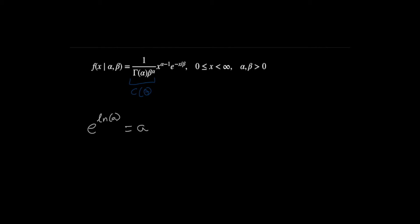If you take e to the log of A, that's just the same thing as A. What this means is that we're able to take the exponential of the log of something without actually changing what that thing is. So we're going to apply that trick here to this term, X to the A minus 1.